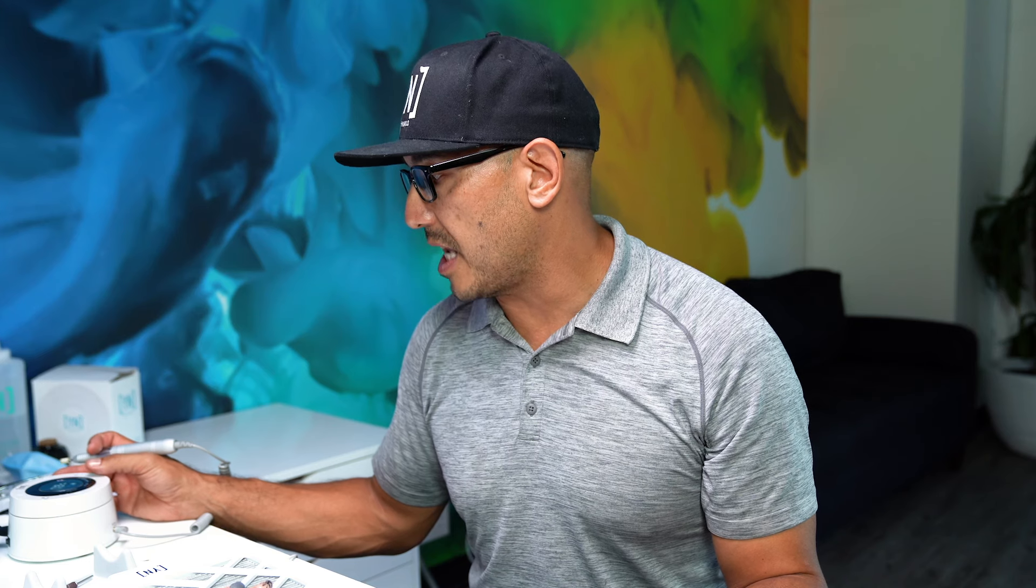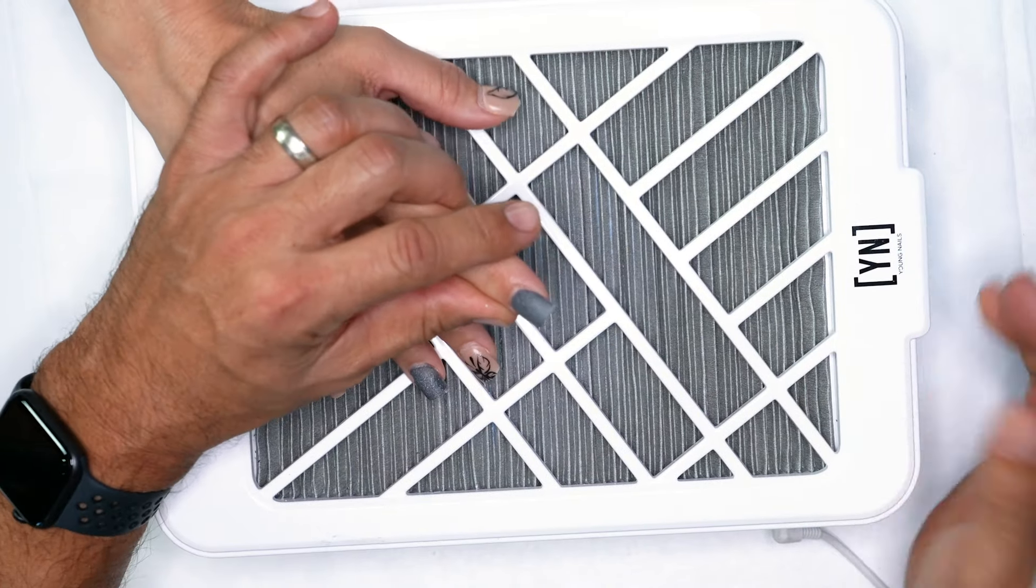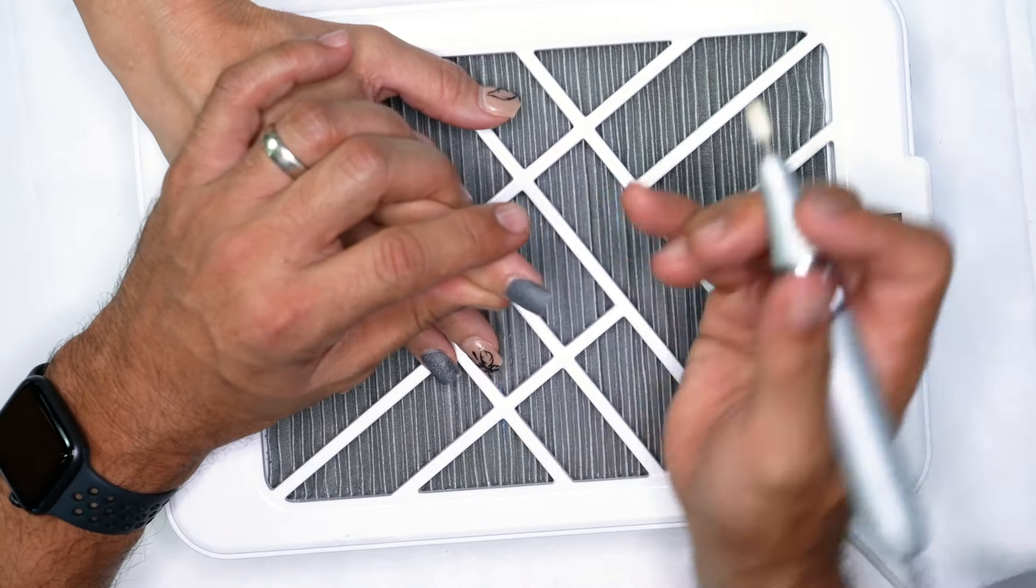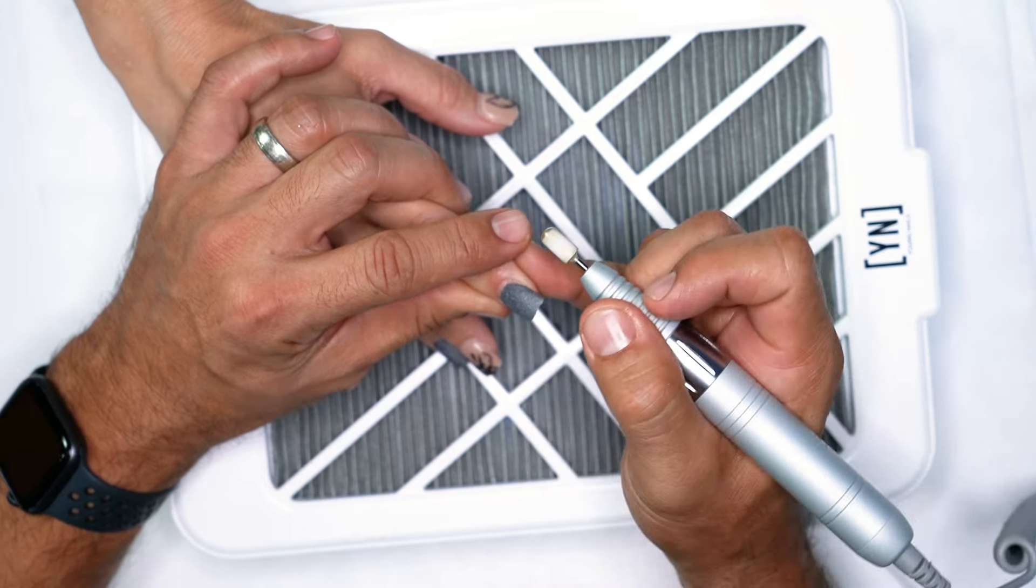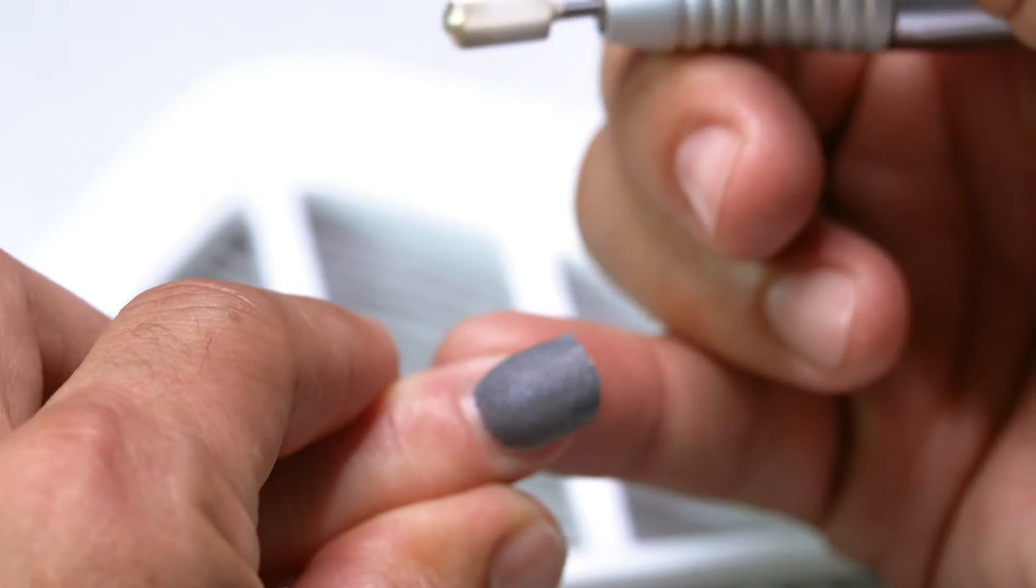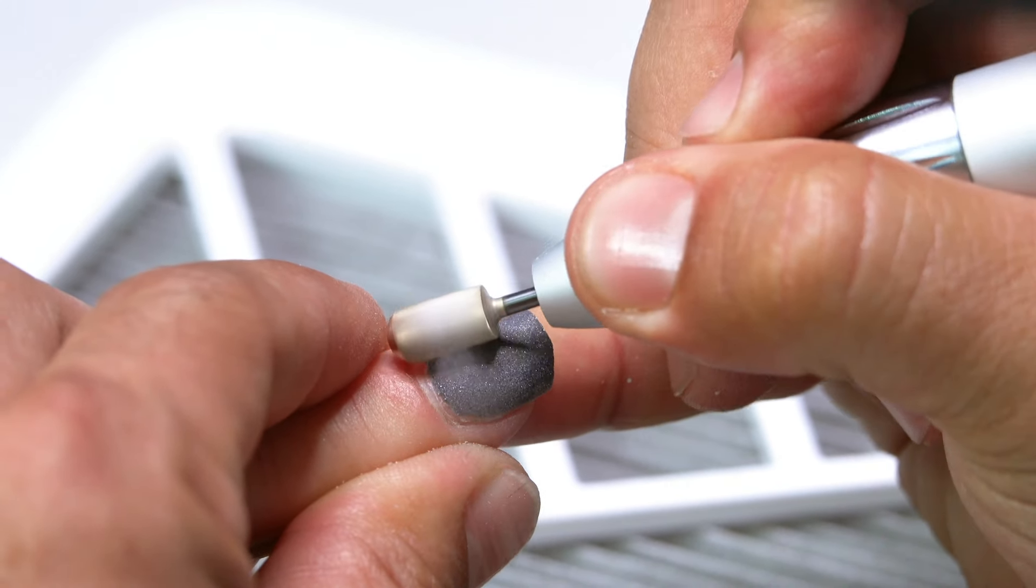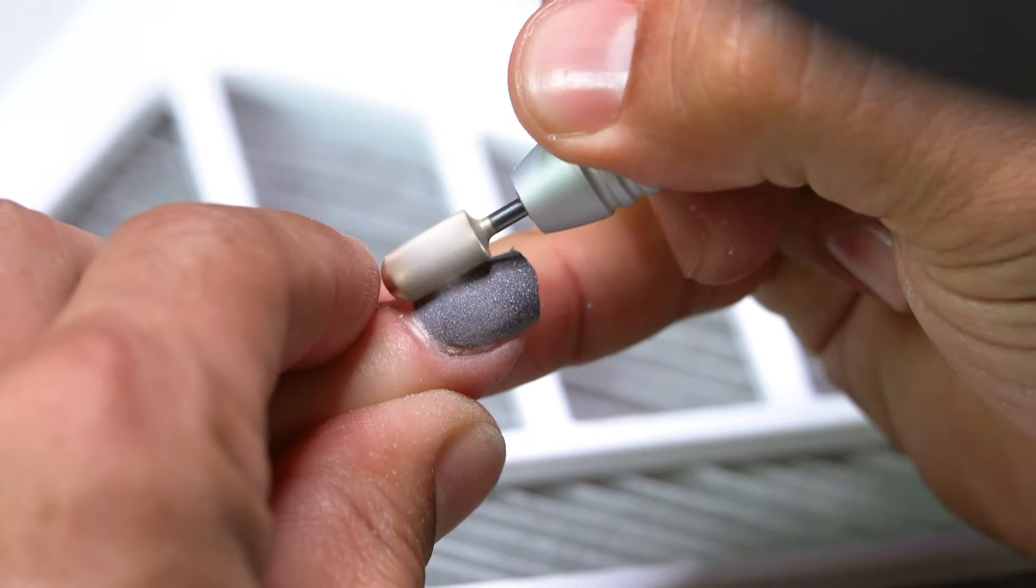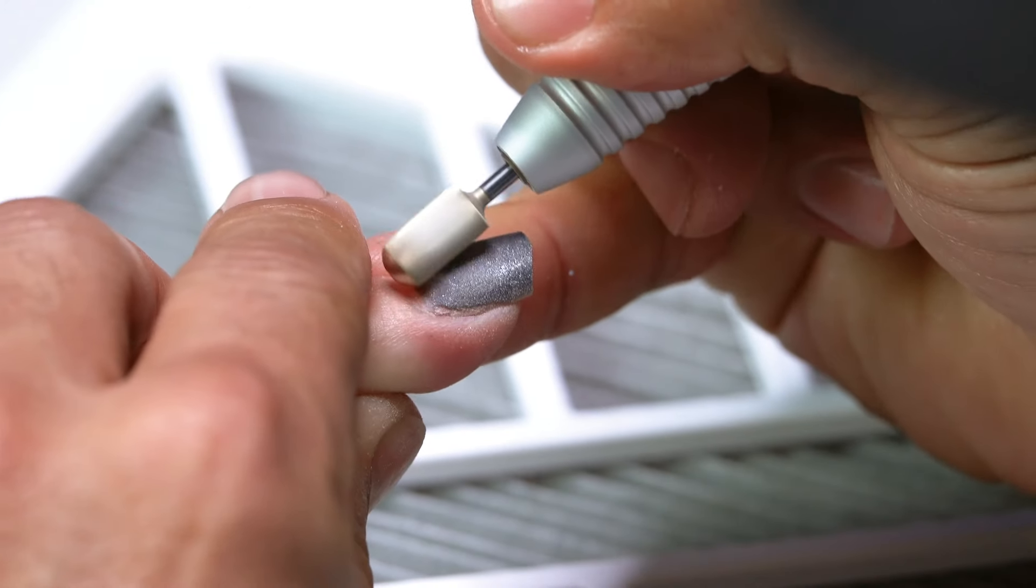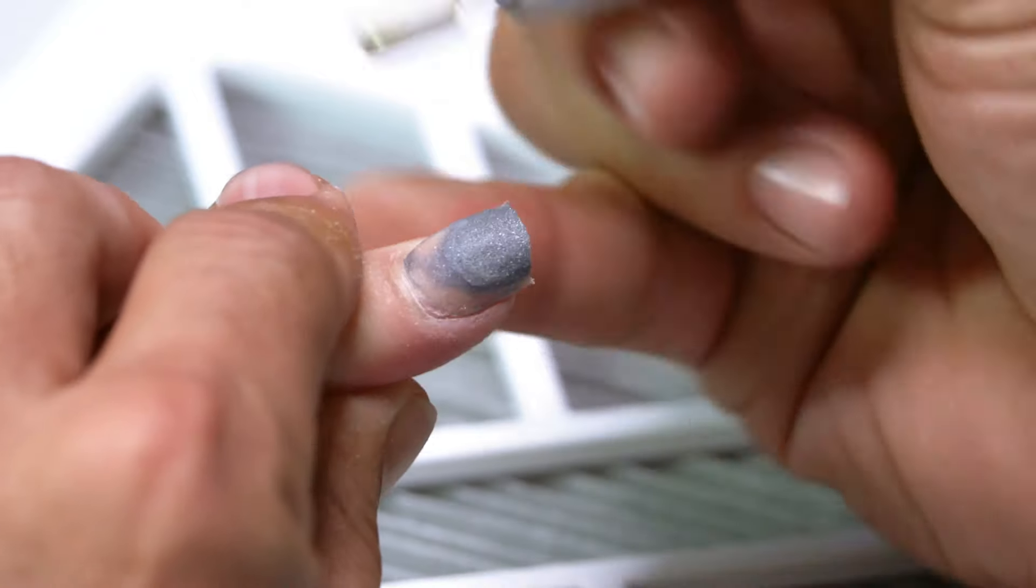So what I'm going to do is I'm going to set my RPMs around 12,000. And what I want to be able to do is work in one direction. As you can see, Tracy has all that thickness right here. There's not a lot of thickness around the cuticle area. So what I'm going to do is start working in one direction around the perimeter of the nail and always in one direction.